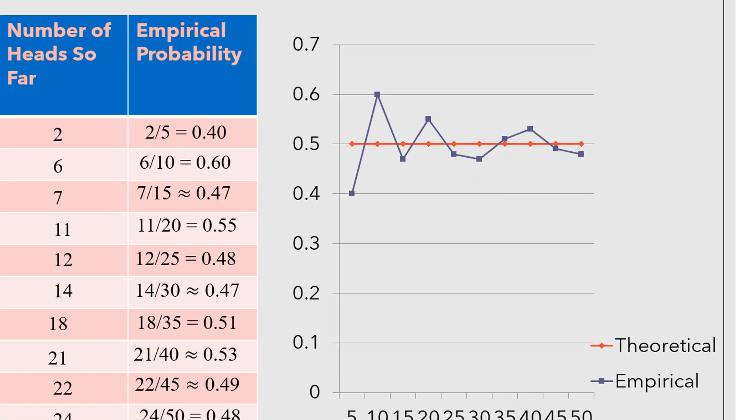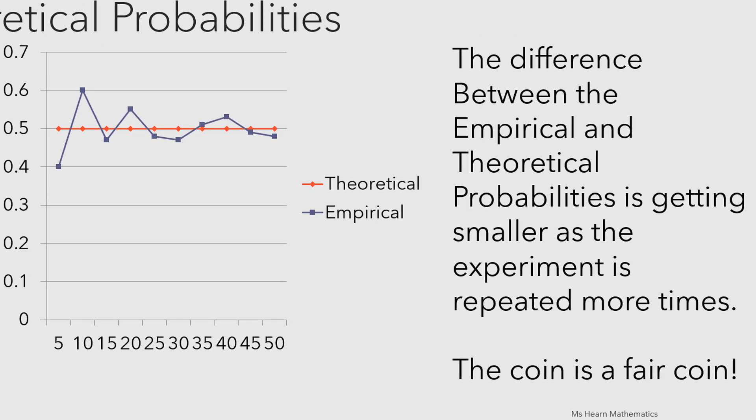Notice that the blue line representing the empirical probabilities looks pretty erratic, which is kind of what we see with the numbers, but there's a trend. It's slowly getting closer to the red line. The difference between the empirical and theoretical probabilities is getting smaller as the experiment is repeated more times.